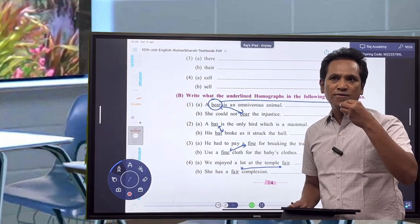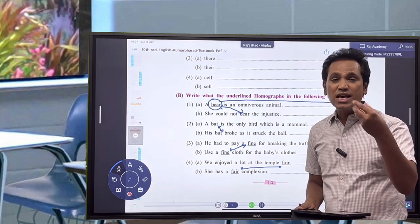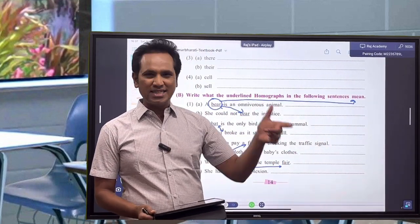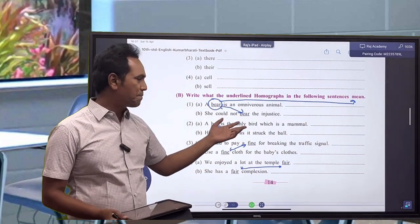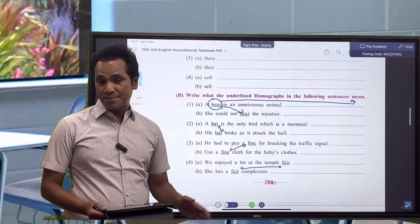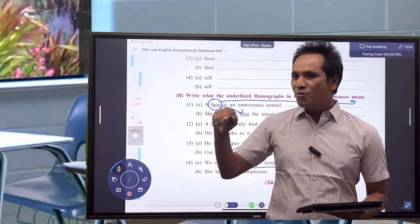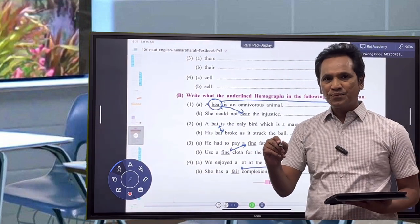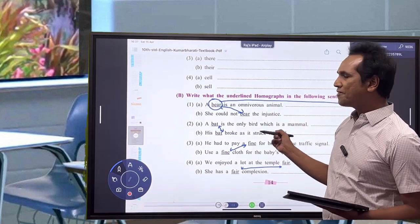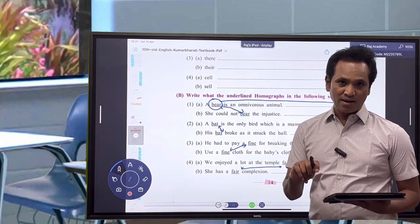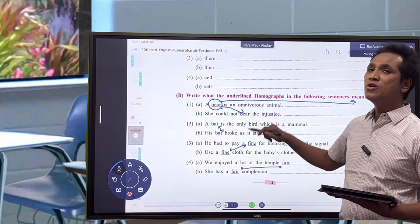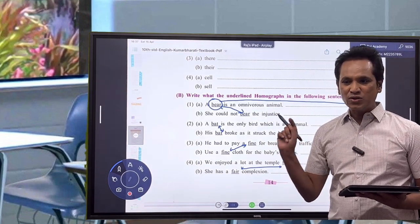Homophones—phones means phonic pronunciations which are the same, homo means the same. And graph means the writing. So writing of bear and bear is the same, bat and bat same, fine and fine same, fair and fair same, but their meanings are different. In the homophones we found that the meanings are different, spellings are different, but pronunciations are the same. Here we find that spellings are same, pronunciations are same, but meanings are different. So here we find only at the meaning level the difference between the two words.